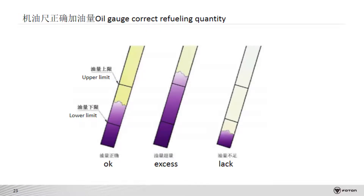The oil should be refilled in accordance with the standard. Correct oil filling is important for the engine. Too much oil filling can cause the engine oil temperature to rise, and high temperature oil can cause many problems, such as turbocharger oil leakage, weakened lubrication effect, and high engine temperature. At the same time, the pressure of the crankcase will be increased, which has a great influence on the seal of the turbocharger.